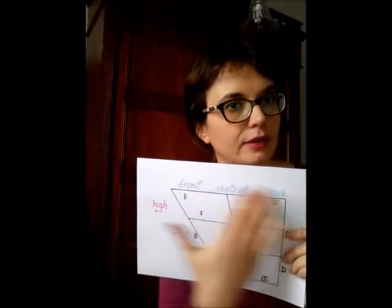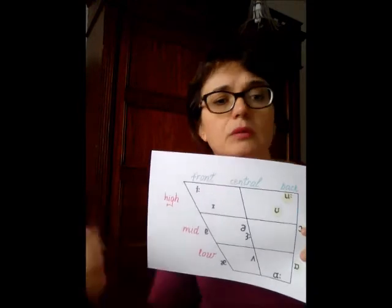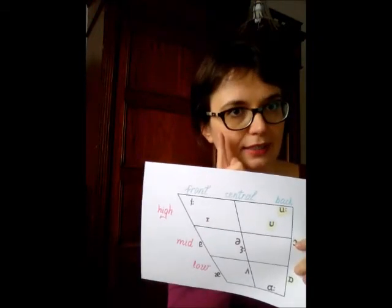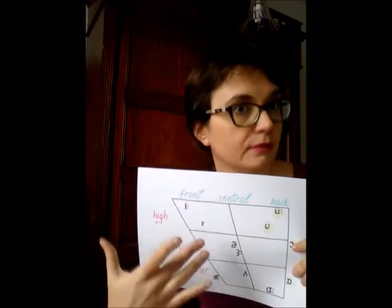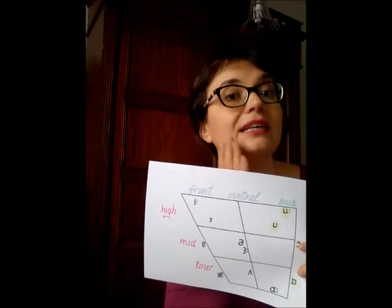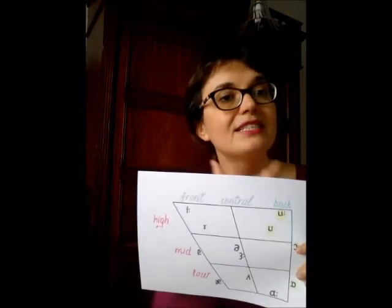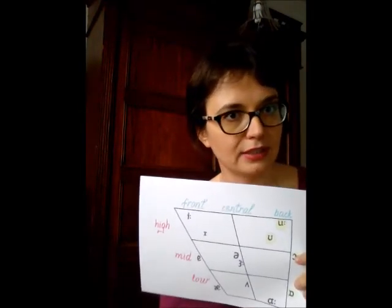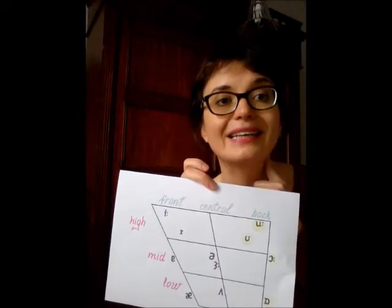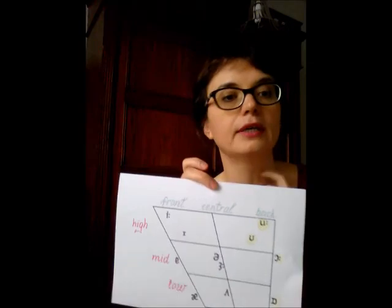Now we shall deal with the horizontal part. Try to pronounce the sound E. What you might notice is that the front part of your tongue is slightly raised towards the hard palate — and that is why we have front vowels. When it comes to central vowels, the central part of the tongue is raised towards the hard palate. And finally, for back vowels, the back part of the tongue is raised towards the soft palate — for example in words like cord, knot, and book.